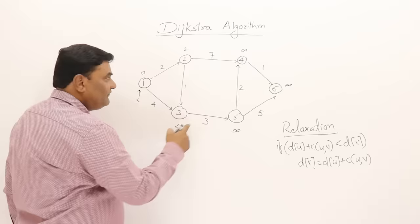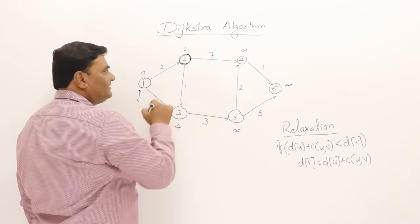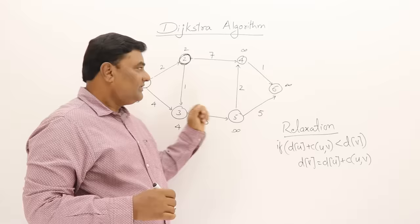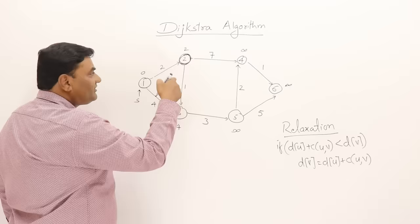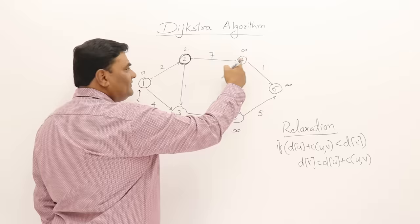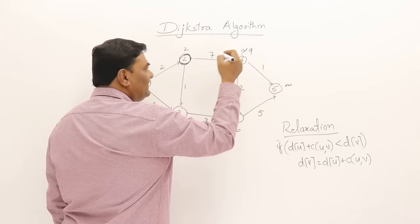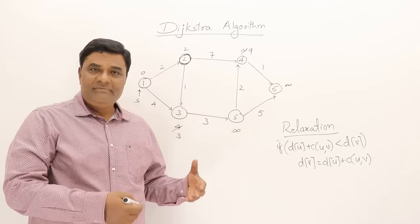Now let us start the repeating steps. Select the shortest path out of 2, 4, infinity, infinity, infinity — the smallest is 2, so select vertex 2. Once selected, perform relaxation. Vertices 3 and 4 are connected. Distance of U is 2, plus 1 gives 3, and the current distance is 4 — so 3 is less than 4, so modify it. Then vertex 4 is also connected: 2 plus 7 is 9, and that is infinity, so modify it to 9.